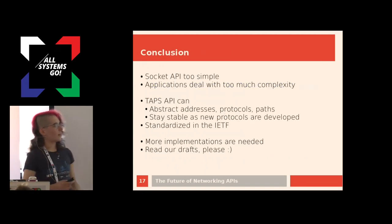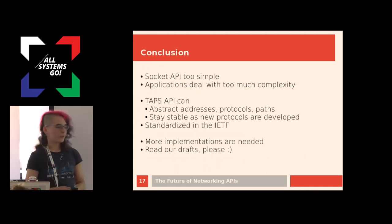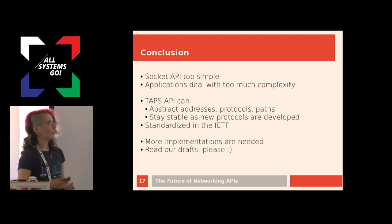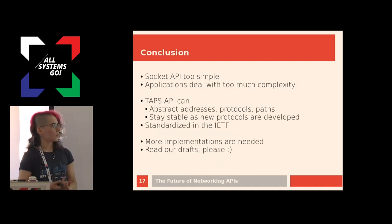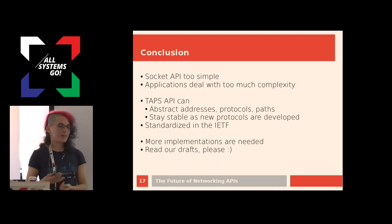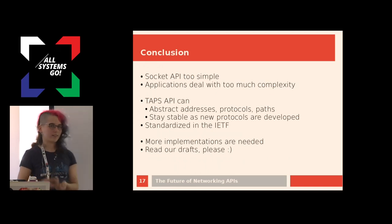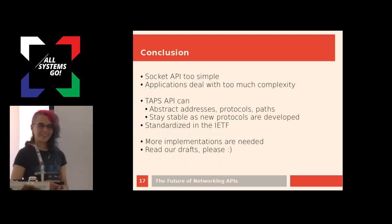Just to wrap it up: the socket API is a very simple abstraction for networking, but it puts too high a burden on the application for dealing with all this complexity. The TAPS API could provide a better abstraction for addresses, protocols, and paths, so the application doesn't have to deal with the low-level networking details, and it would hopefully stay stable as new protocols are being developed. This TAPS abstraction for an API is being standardized in the IETF, and we would like more implementations and more people to read our drafts. Thank you.